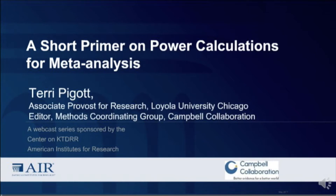This is the third part of a three-part webcast series which focuses on methods for conducting systematic reviews. You can find more information about the webcast series, including links to the previous webcasts, PDFs, and text descriptions of the slides at our website, which is KTDRR.org. Today we're joined by Terri Piggott. She'll be giving us a short primer on power calculations for meta-analysis. Terri is the Associate Provost for Research at Loyola University in Chicago and the editor of the Methods Coordinating Group at the Campbell Collaboration.